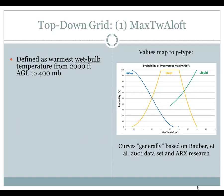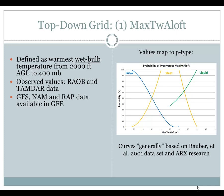The first top-down grid is the max wet bulb aloft, defined as the warmest wet bulb temperature from 2,000 feet above the ground up to 400 millibars. You can get observed values for this grid from RAOB and TAMDAR data. In GFE, the GFS, the NAM, and RAP are all available.